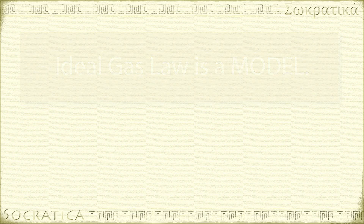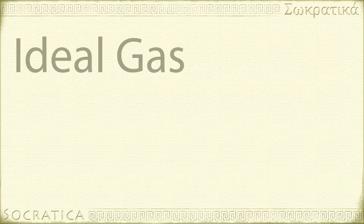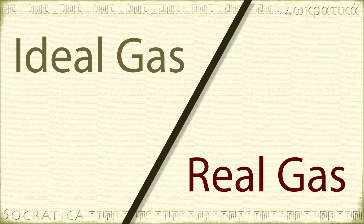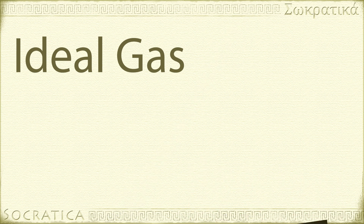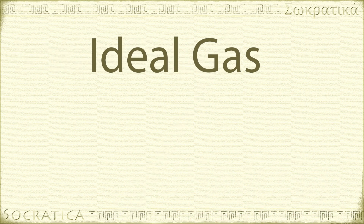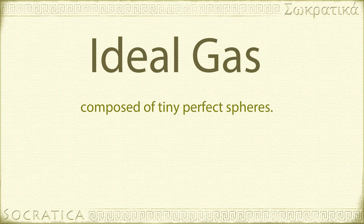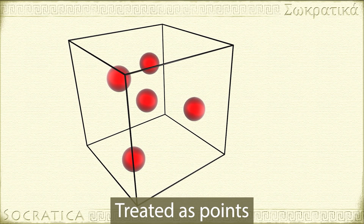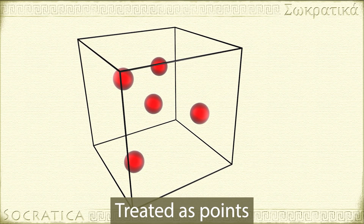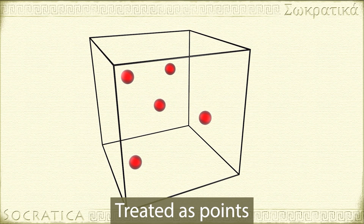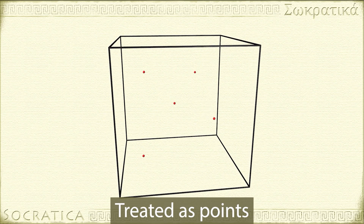Let me tell you the differences between ideal gases and real gases. An ideal gas is composed of particles that are like the tiniest perfect spheres, vanishingly small, like when you talk about points in math. So the individual particles aren't taking up any space.